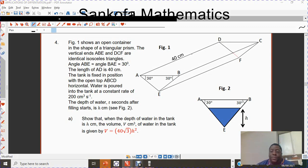Figure 1 shows an open container in the shape of a triangular prism. The vertical ends ABE and DCF are identical isosceles triangles. Angle ABE and angle BAE are 30 degrees each. The length of AD is 40 cm as you can see in the diagram. The tank is filled in position with the open top ABCD horizontal. Water is poured into the tank at a constant rate of 200 cm³ per second.